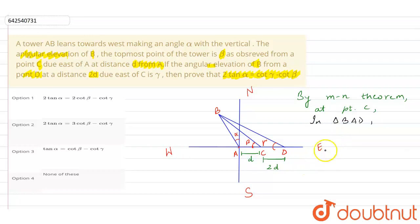So triangle BAD, according to the theorem, we are writing the expression now. So M plus N is D plus 2D. D plus 2D, I am sorry, here it will come cot beta only, cot beta, this angle was beta.